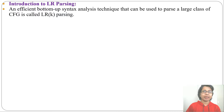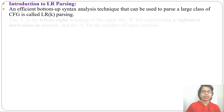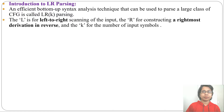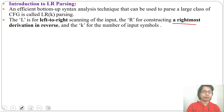What is LR parsing? First, L stands for left-to-right scan. R stands for rightmost derivation in reverse, and K is the number of input symbols, or look-ahead symbols. I already discussed rightmost derivation in reverse.